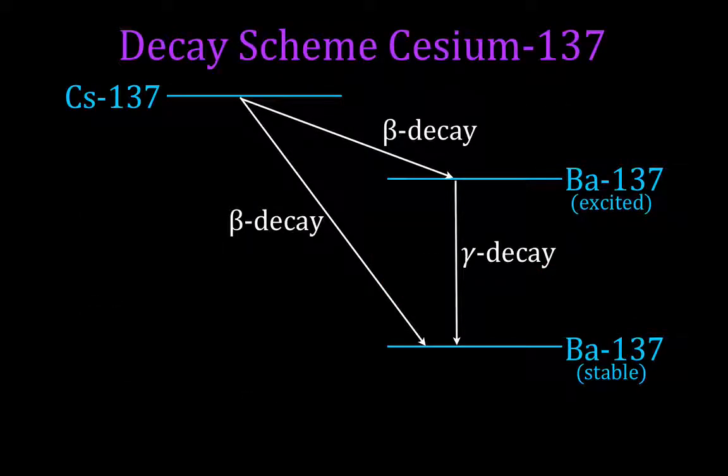Okay, this is the decay scheme. I just thought I'd show this. It looks kind of cool. The decay scheme for cesium-137. Cesium-137 decays to barium-137 through a beta decay, and there's two possible decay paths.